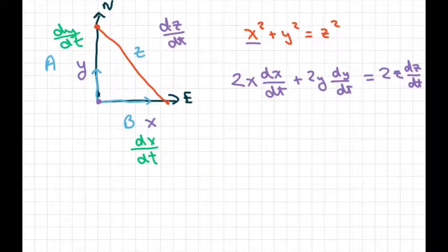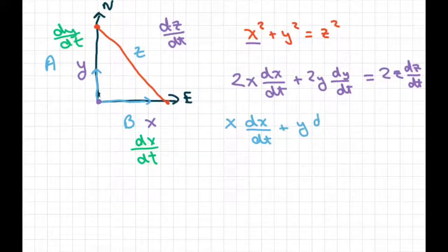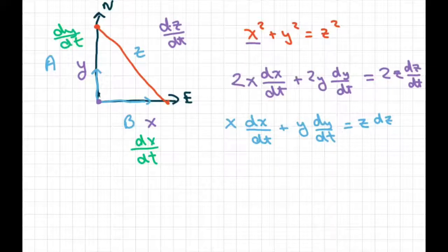Derivative of Z with respect to time. And also since they all have 2's in them, I can divide everything by 2 and just simplify this. So this would be X DX over DT plus Y derivative of Y with respect to T equals Z DZ over DT.